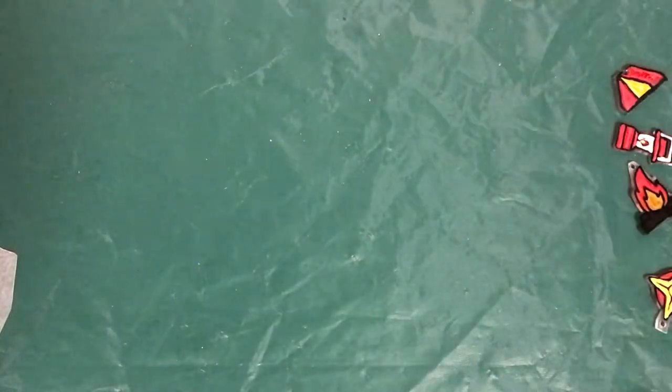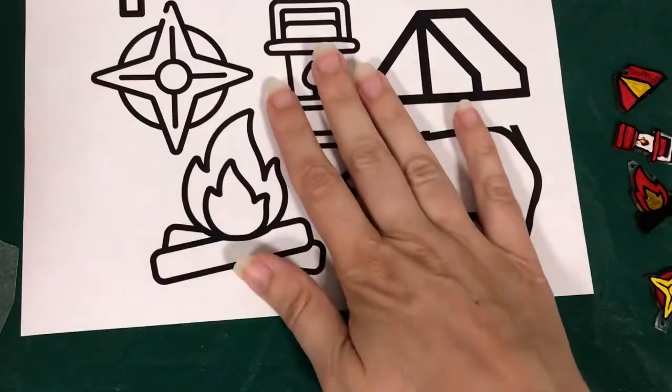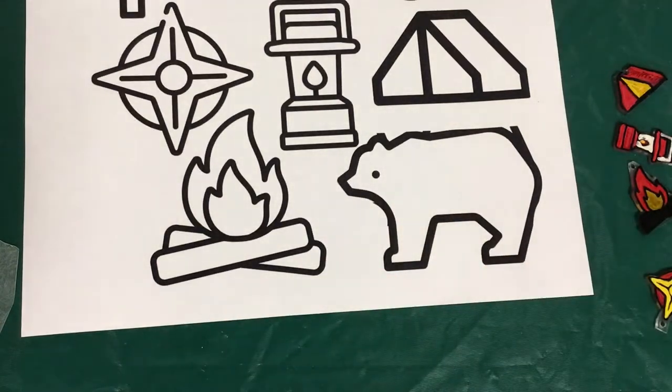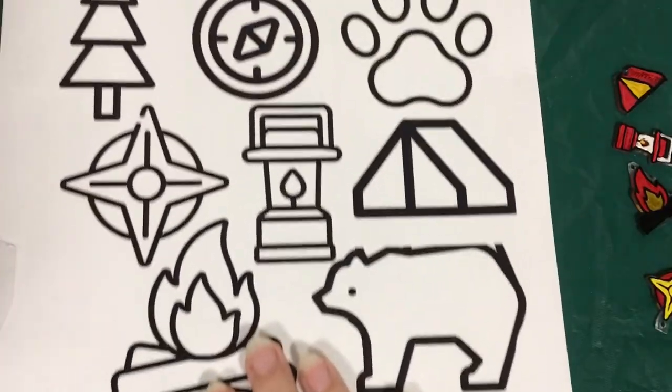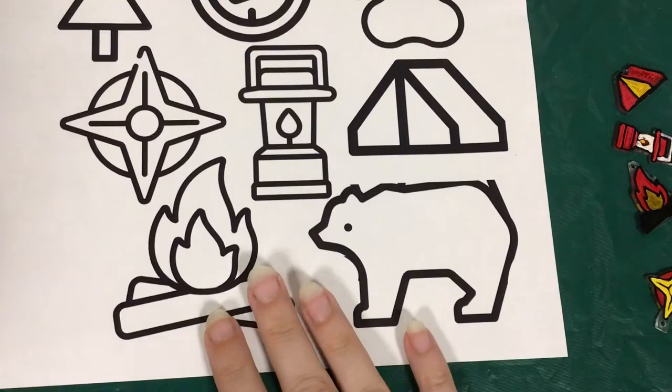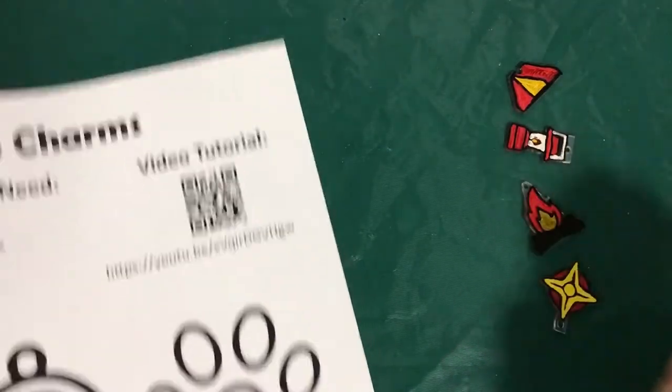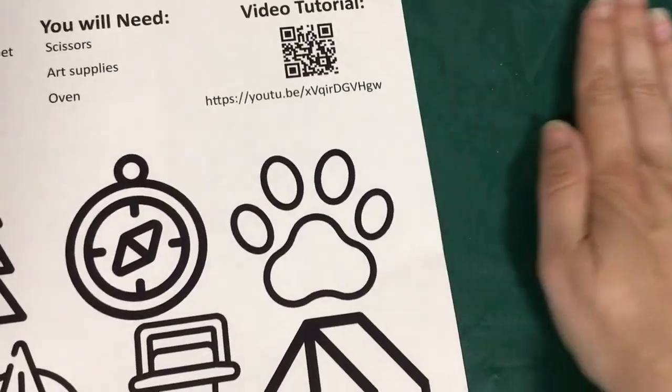The first thing you're going to want to do is get out your template sheet and your Shrinky Dink material. Now I've given you seven to choose from, but you can only really fit four on a bracelet. So choose the four you like the best.